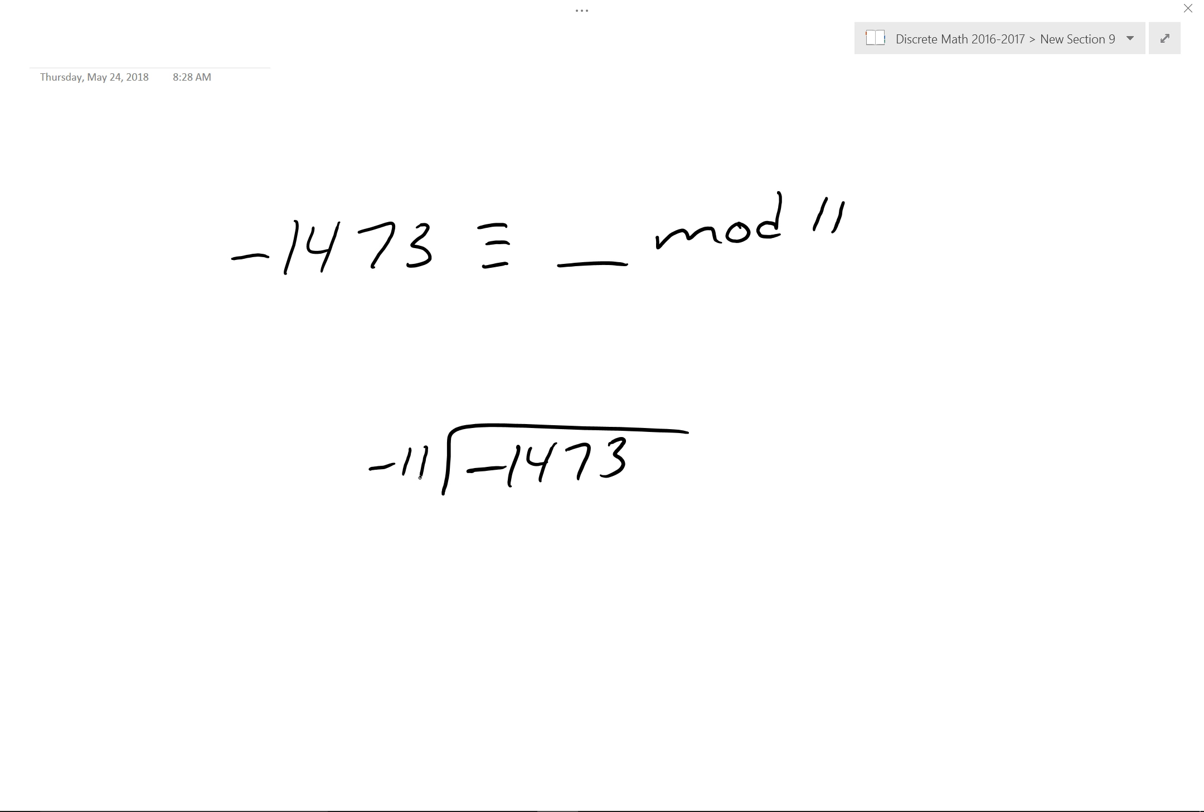Divide it up. Negative 11 goes into negative 1473. Exactly? No. 133 point something, something, something. Everyone get that? So what I'm going to do is I'm going to take 133 times negative 11. And what will I get when I do that? It will be a negative number. This is true.